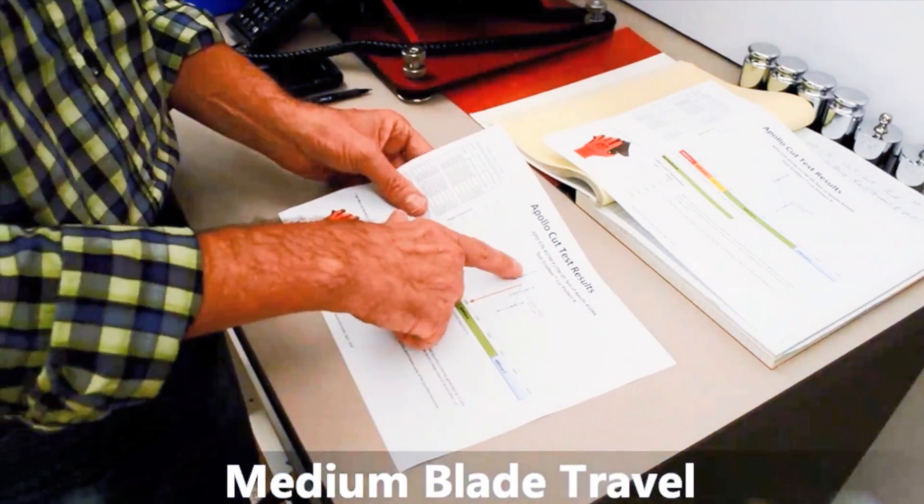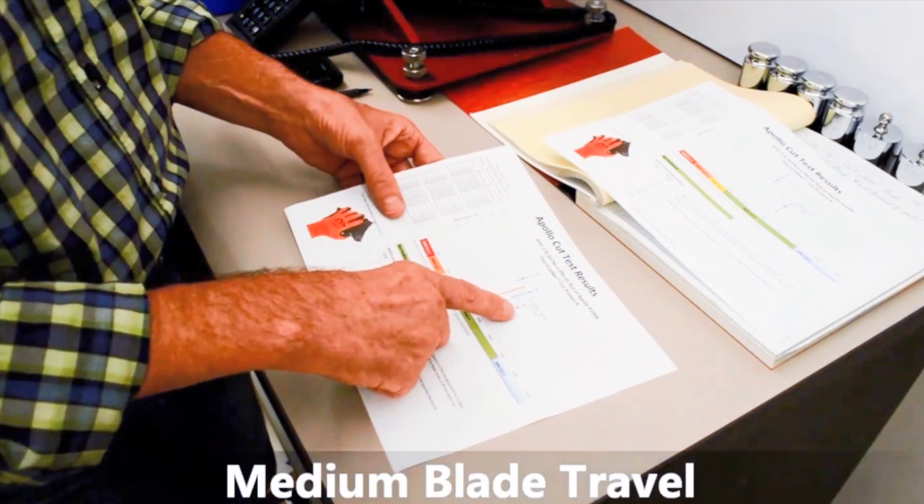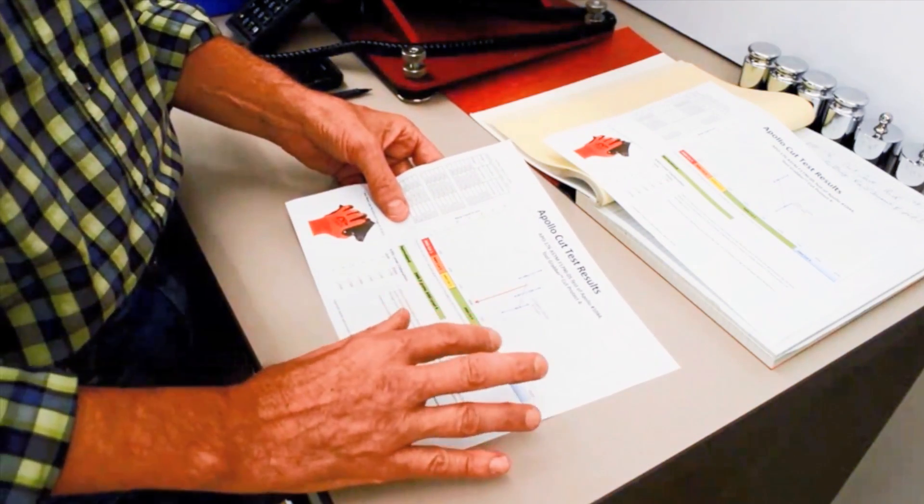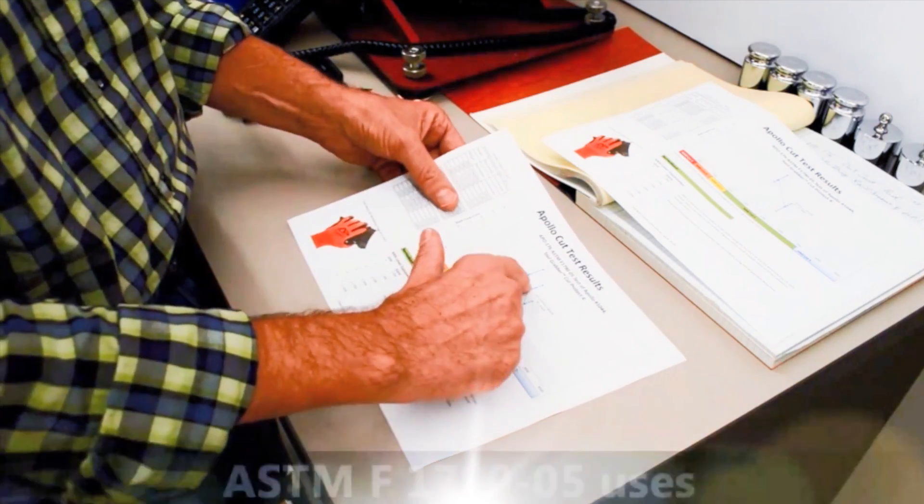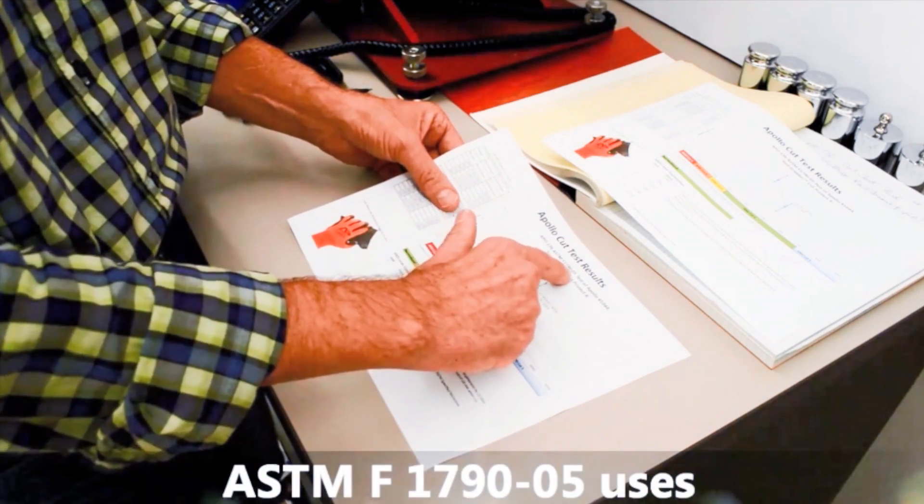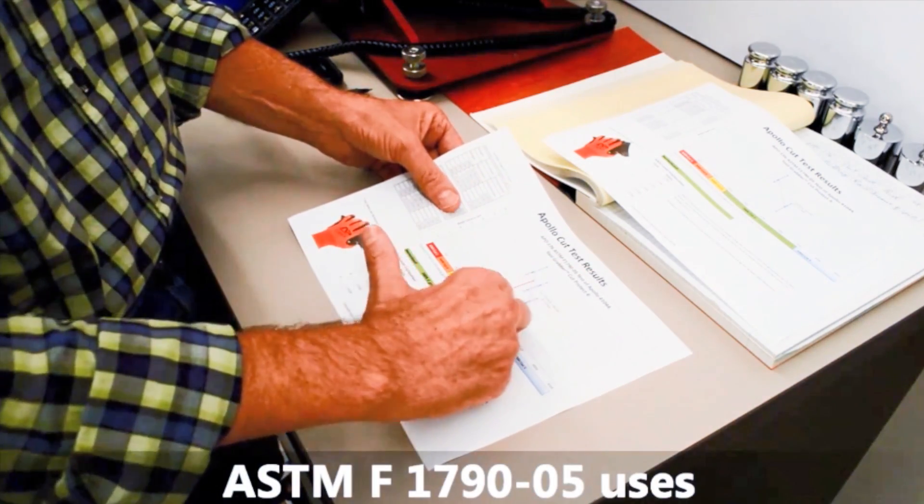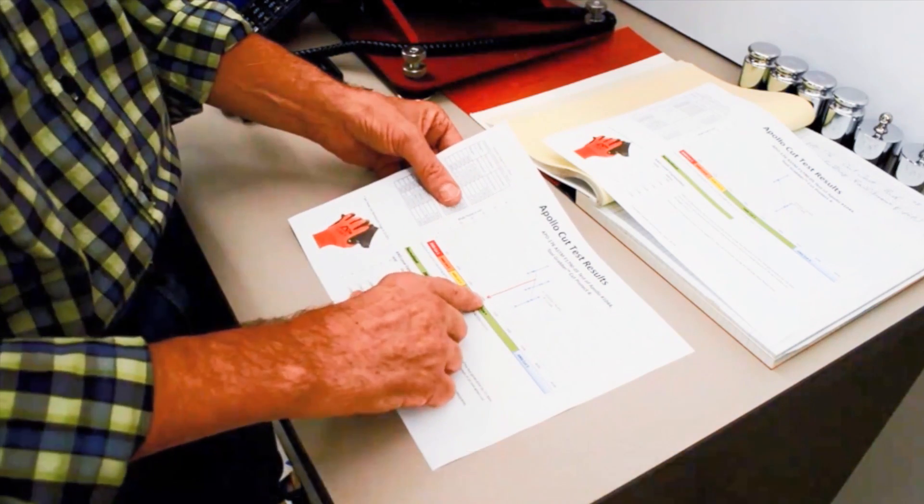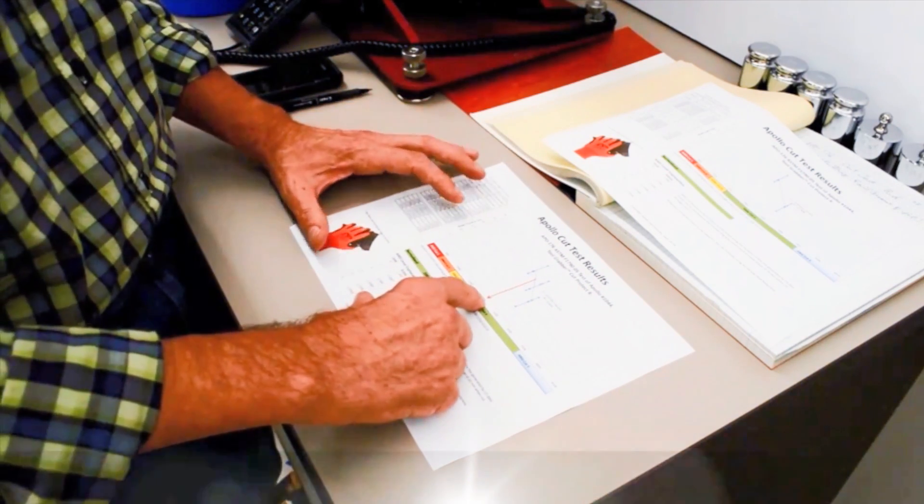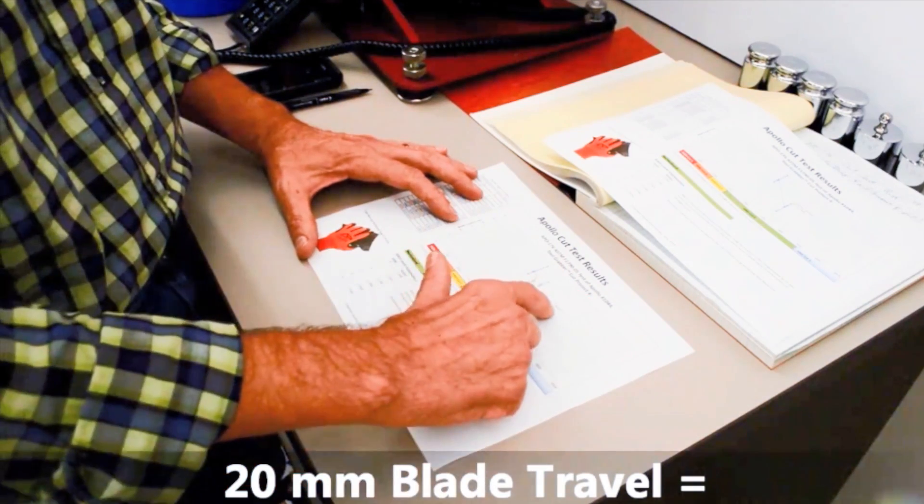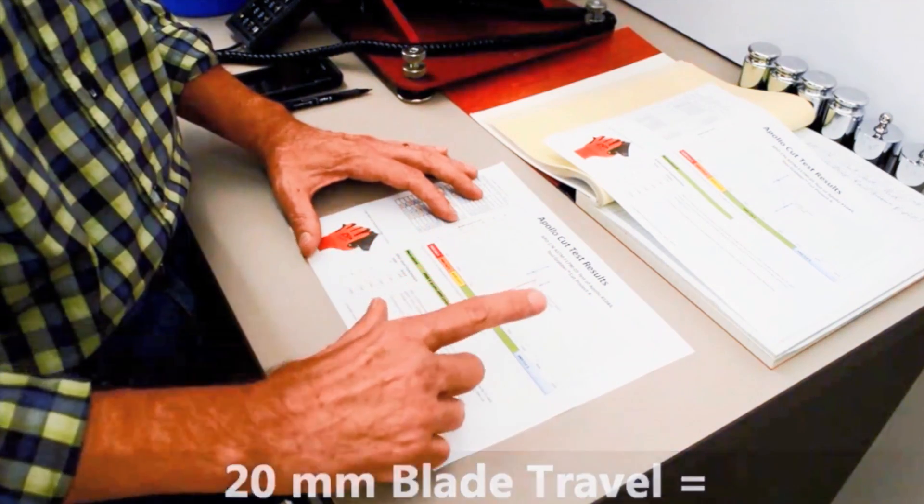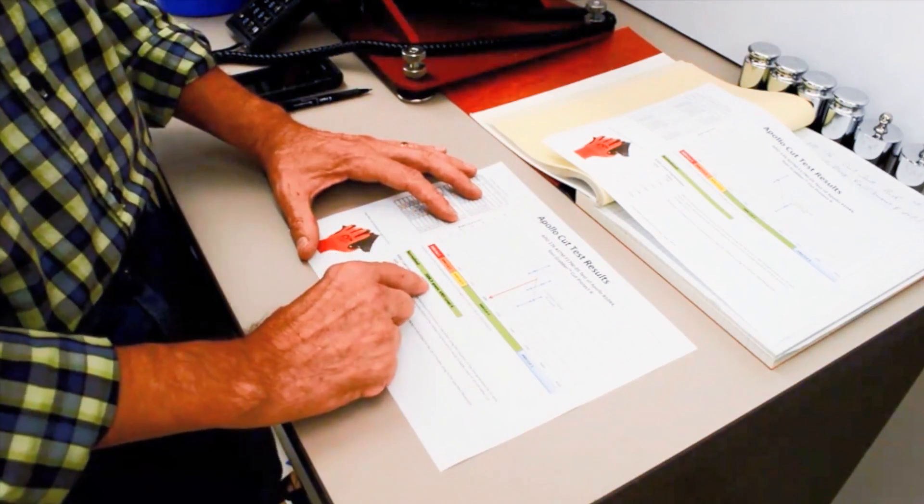And you can see from the line that what you do then is you look for the place on the line where there's 20 millimeters of blade travel per the ASTM F1790 standard. So you can either draw the line there and see that it's a little over 2,000, or we think it's more accurate to use the equation of the line.